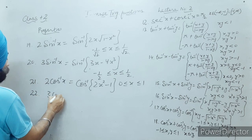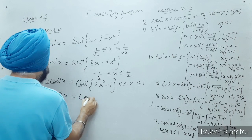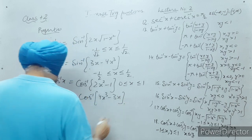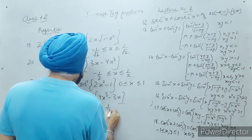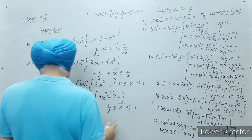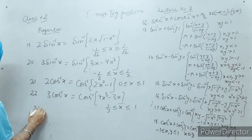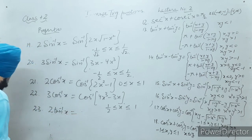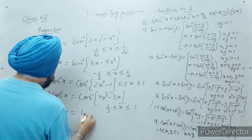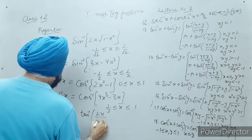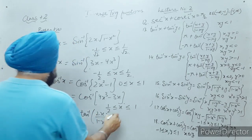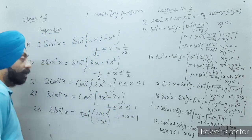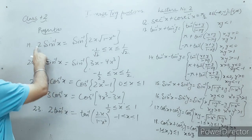3 cos inverse x equals cos inverse of (4x³ minus 3x), where one half is less than or equal to x less than or equal to one. Next property: 2 tan inverse x equals tan inverse of 2x upon (1 minus x²), where minus one is less than x less than one.